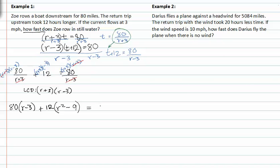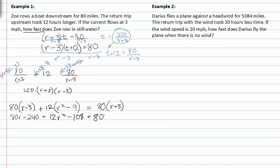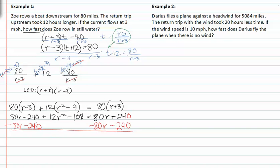That equals eighty times r plus three. Distributing gives us the expanded form. Subtracting eighty r from both sides, and subtracting two hundred forty — that was supposed to be two hundred forty, not twenty-four.